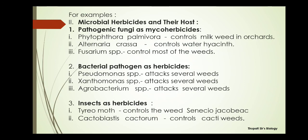There are also insects that can be used as herbicides, which are bio-organisms controlling other bio-organisms. Examples include Tyrion Moth and Cactoblastis cactorum, which control cacti weeds. So whether we use bacterial herbicides, fungal herbicides, or insect herbicides, they all work against unwanted plants to protect the main crops from weeds.